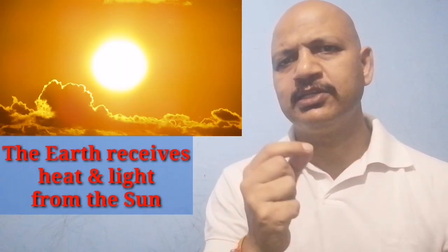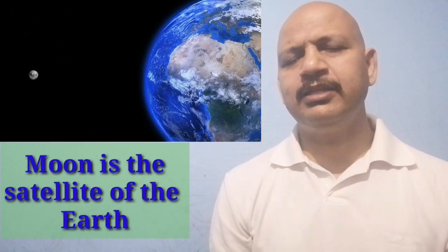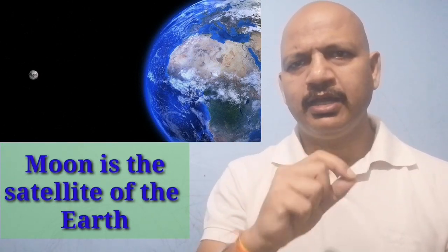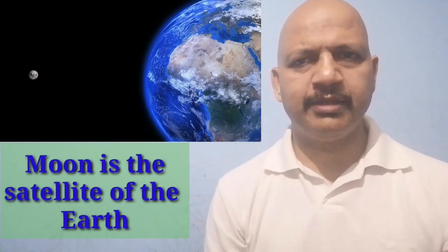The Earth receives heat and light from the sun, which is our nearest star. The Earth has a satellite known as the moon which we can see in the night sky. The moon is the satellite and companion of the Earth. It moves around the Earth. Like the Earth, some of the other planets too have their own moons.